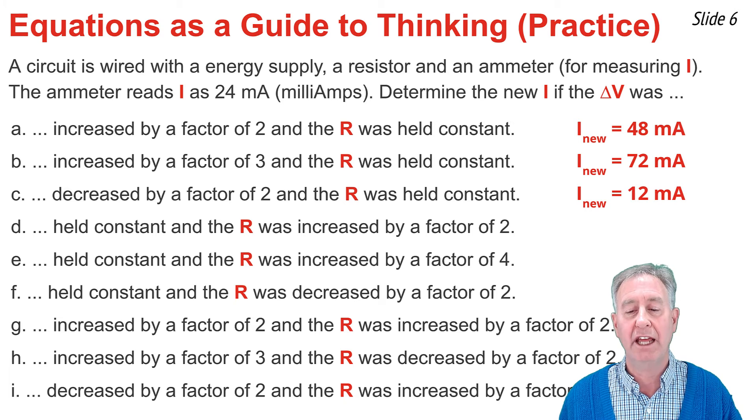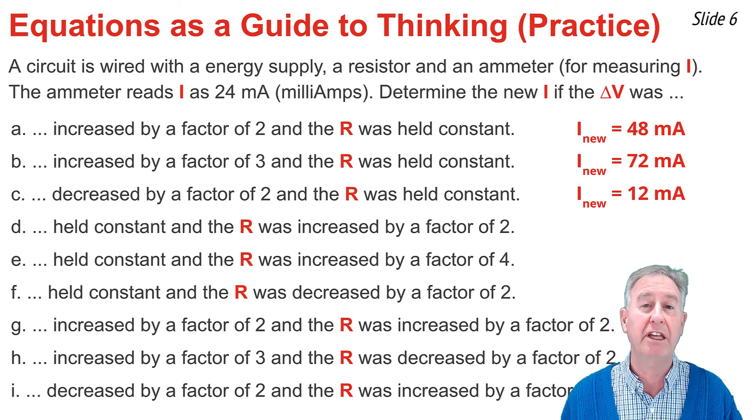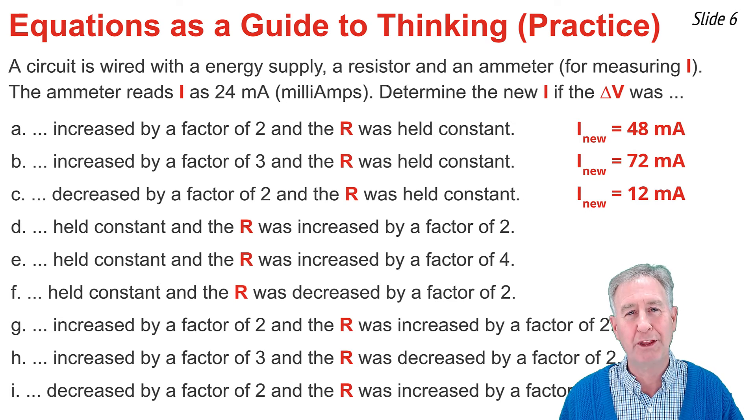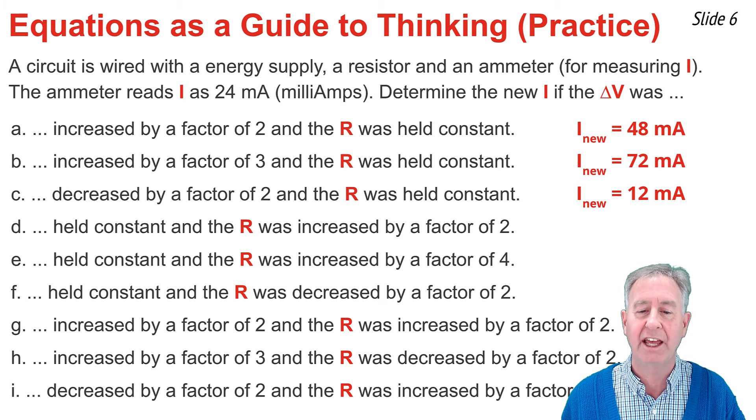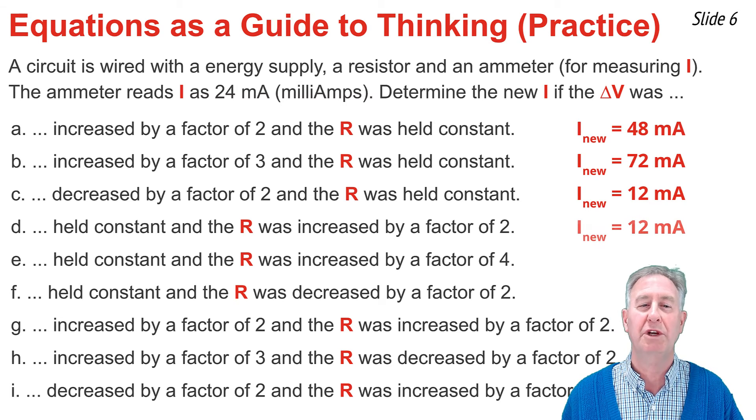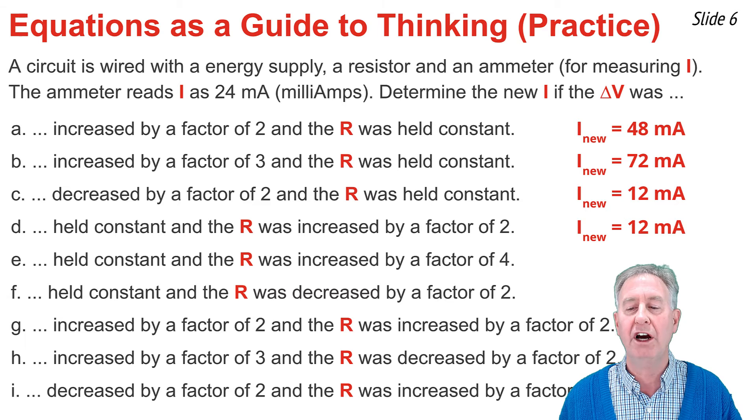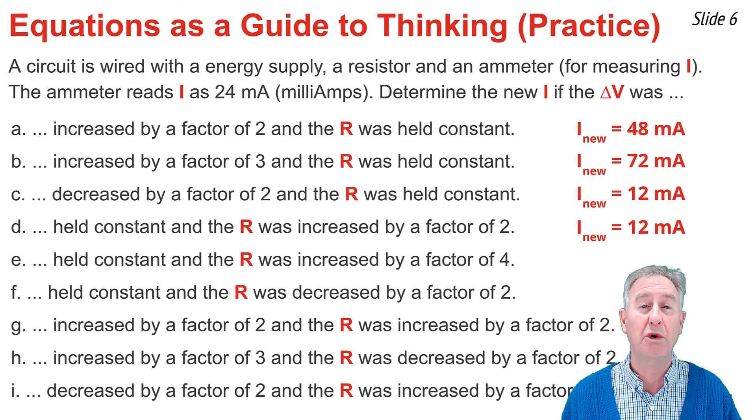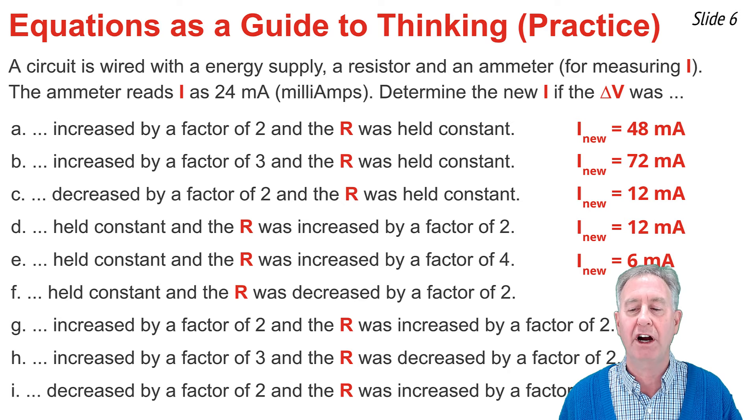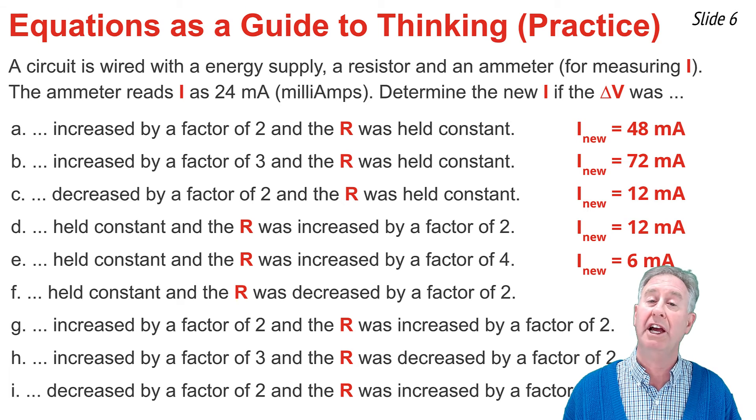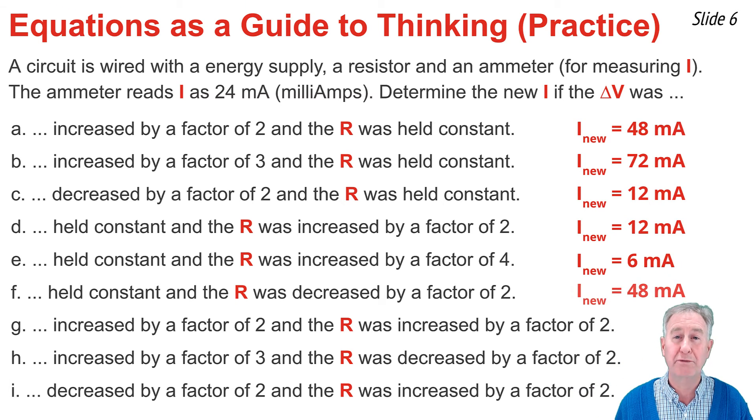In D, E, and F, no changes are being made to delta V, but R is changing. I and R are inversely proportional. Whatever change you make in R, the inverse or reciprocal change is made to I. In D, R is increased by a factor of two, so I must decrease by a factor of two and becomes 12 milliamps. In E, R is increased by a factor of four, so I must be one-fourth as much, 6 milliamps. And in F, R is decreased by a factor of two, so I is increased by a factor of two, doubling to 48 milliamps.